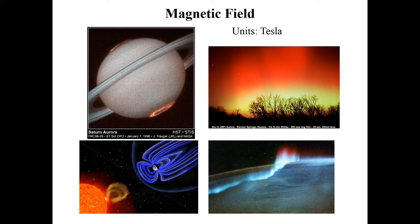Probably the first example of magnetism we want to talk about is that the Earth is magnetic. The Earth generates a magnetic field, and here you see the Earth's magnetic field deflecting charged particles that are ejected by the sun — they crash into the north and south poles. These are called the northern lights, or the aurora.